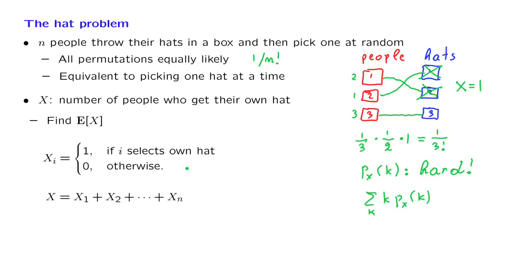So we need to find a more intelligent approach. The trick we will use is to employ indicator variables. Let X_i equal 1 if person i selects their own hat and 0 otherwise. Each X_i is 1 whenever a person selects their own hat, and by adding all the ones we obtain the total number of people who selected their own hats: X = X_1 + X_2 + ... + X_n. This makes things easier because we can now use linearity of expectation.